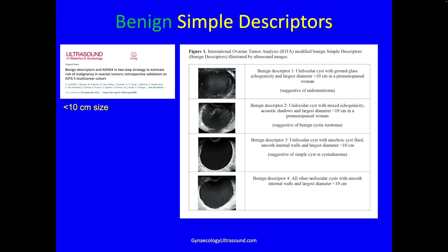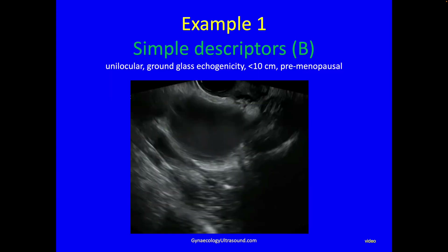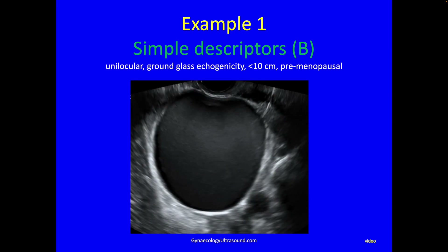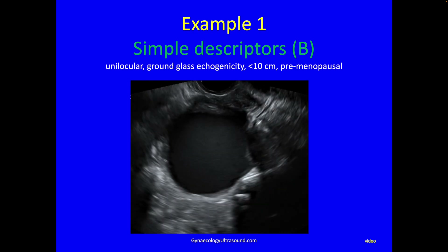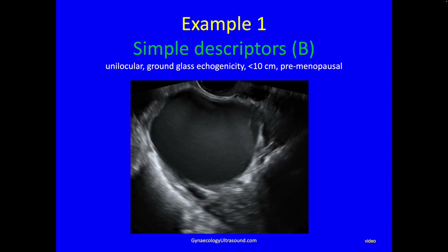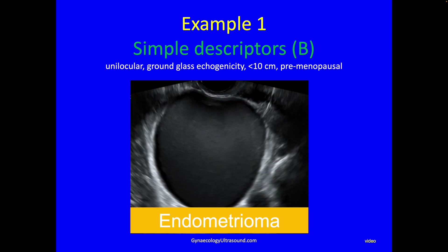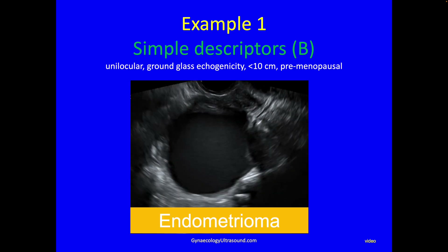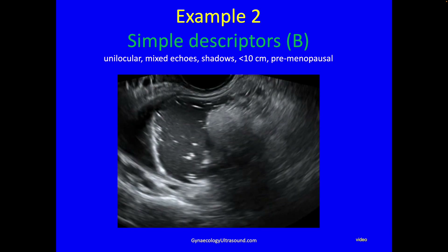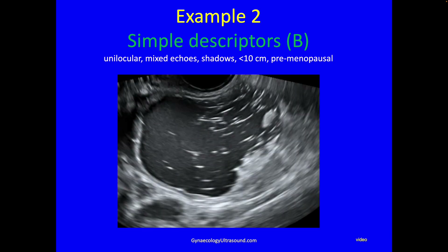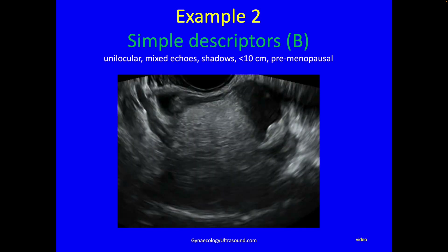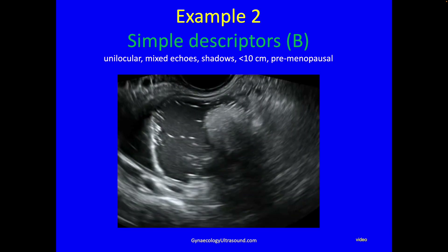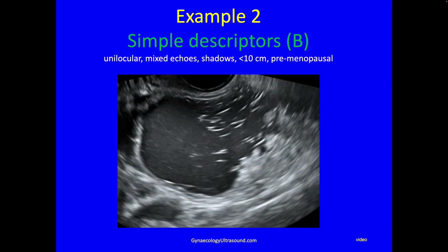The benign simple descriptors were published recently and describe four categories. An endometrioma is a unilocular cyst, no solid component, ground glass echogenicity, less than 10 centimeters, in a premenopausal woman. A dermoid is a unilocular cyst, no solid component, but with mixed echogenicity and shadowing, less than 10 centimeters, in a premenopausal woman.